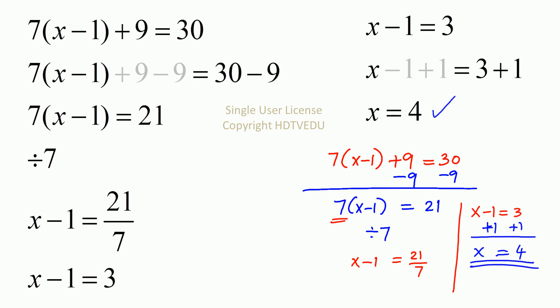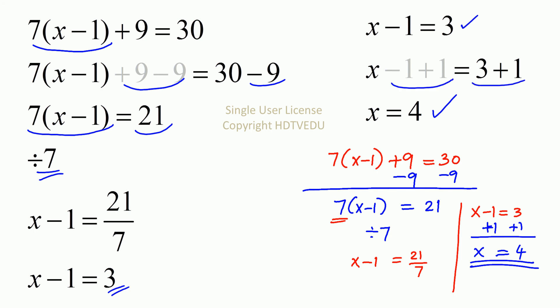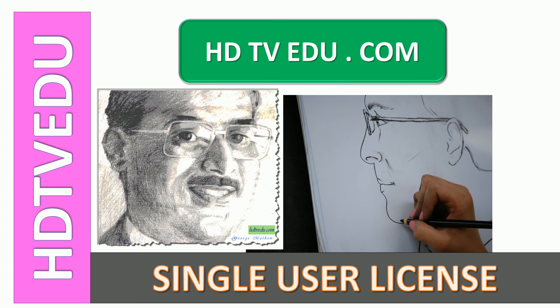So let's do this again. 7 times x minus 1 plus 9 is equal to 30. Subtract 9 from both sides: 7 times x minus 1 is equal to 21. Divide both sides by 7: x minus 1 is equal to 21 over 7, which is 3. So x minus 1 is equal to 3. Add 1 to both sides and you get x is equal to 4. And this is George Matthew signing off. Good luck.